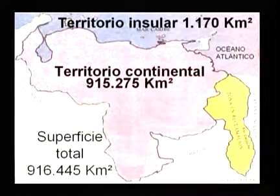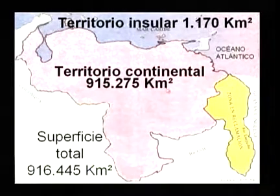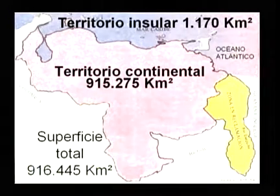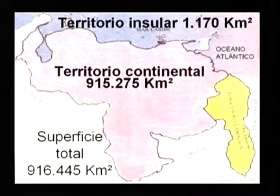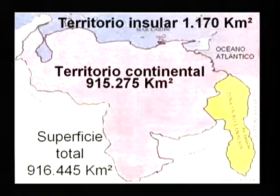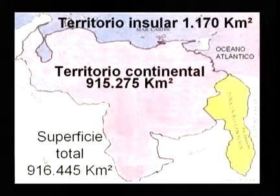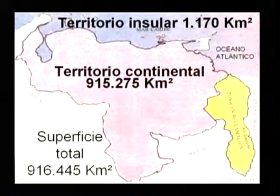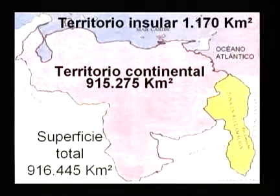La superficie correspondiente al territorio continental es de 915.275 kilómetros cuadrados: es todo el espacio del territorio que está dentro del continente. Hacia la parte norte vamos a tener el territorio insular, compuesto por todas aquellas islas, islotes y cayos que están dentro de nuestra jurisdicción o soberanía marítima, con una superficie de 1.170 kilómetros cuadrados. Si sumamos la superficie del territorio continental más la del territorio insular, obtenemos la superficie total de Venezuela: 916.445 kilómetros cuadrados.